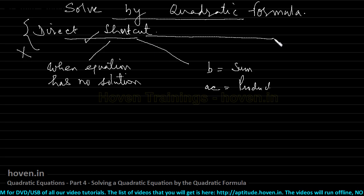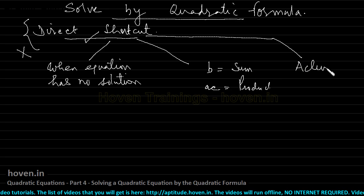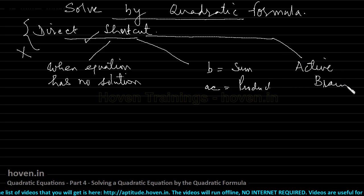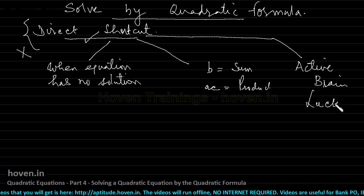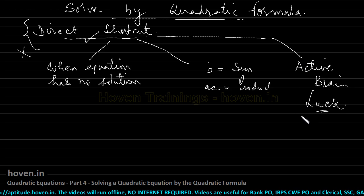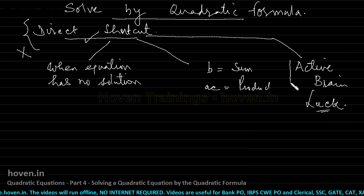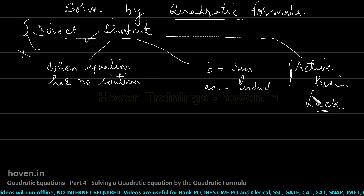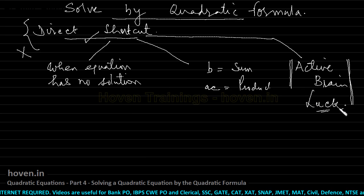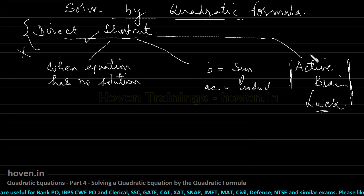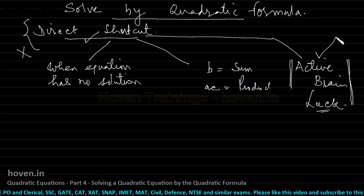I will add one more disadvantage: the direct shortcut method requires an active brain and luck. Luck is something that may or may not strike at the moment. In a competitive exam, both these things are not guaranteed — you are continuously using your brain and your glucose on various problems, so the guarantee of this is not ensured.